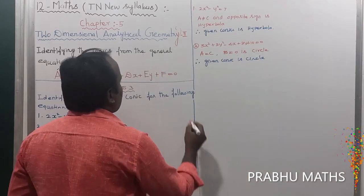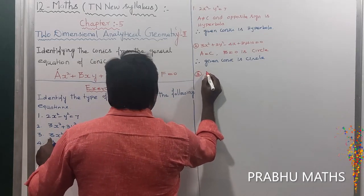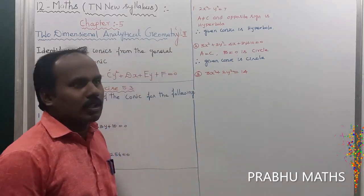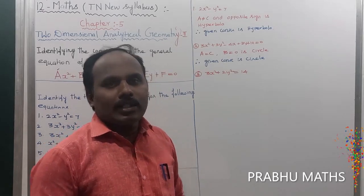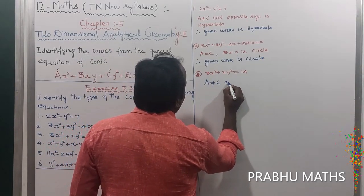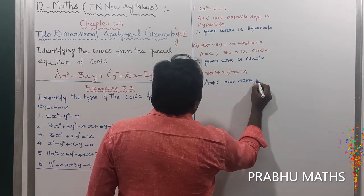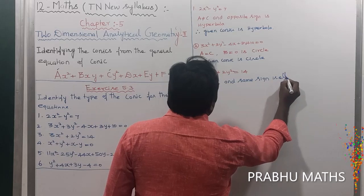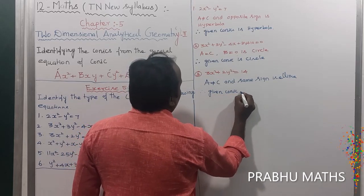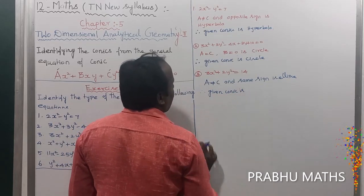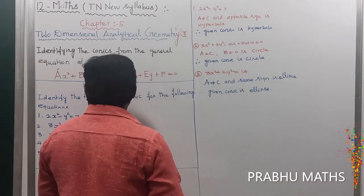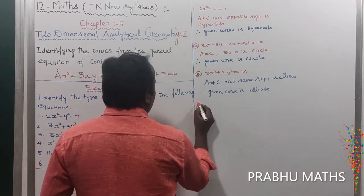Third sum: 3x² + 2y² = 14. The coefficient of x² is a and the coefficient of y² is c. These two values are not equal — a is not equal to c — but they have the same sign. Same sign with a not equal to c means it is an ellipse. Therefore, the given conic section is an ellipse.